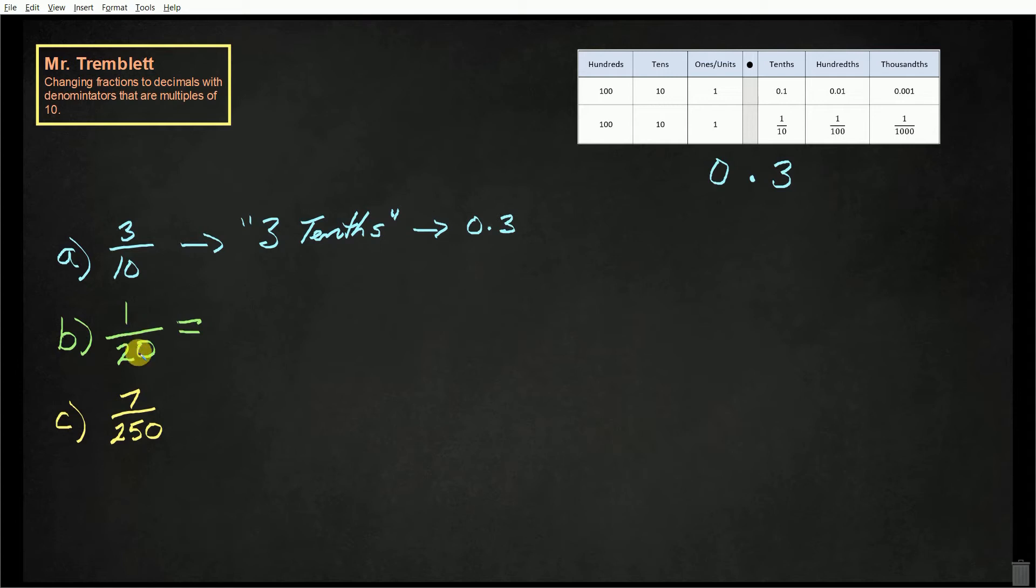We couldn't half them because we'd have 0.5 or half a tenth. So what we would do is multiply 20 by 5, which gives us a denominator of 100. We're going to do the same thing to the numerator, multiply it by 5, and we get an equivalent fraction of 5 hundredths.